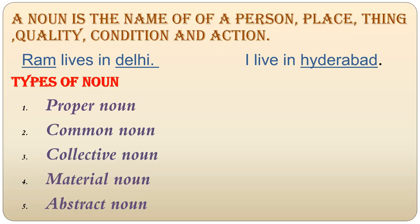Before we start with the kinds of nouns, always remember one rule — the first and foremost rule of English grammar. A singular subject will always take a singular verb, and a plural subject will always take a plural verb. We can understand the singular subject — we don't put S or ES. But for the singular verb, it gets a little tricky. The singular verb happens when we put S or ES with it, and that verb will be plural when we remove S and ES.